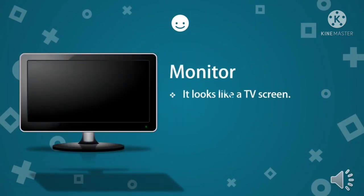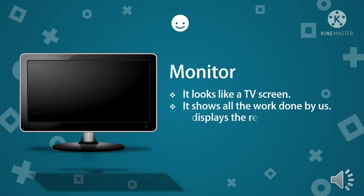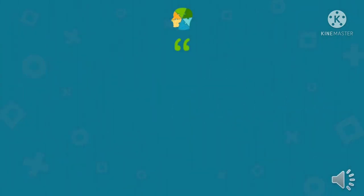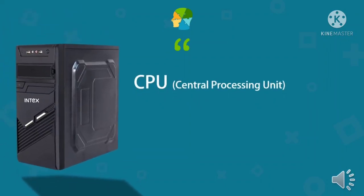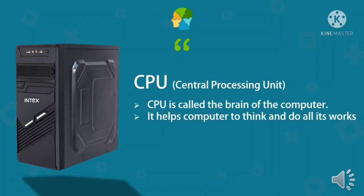Monitor: A monitor looks like a TV screen. It shows the typed text and the work we do on a computer. It also displays the result, and we can see movies and play games using a monitor. CPU: Have you seen a black box attached to your computer? That black box is known as the CPU, that is, Central Processing Unit. The CPU is called the brain of the computer, just as our brain controls all the different parts of the body. All the parts of the computer are connected to the CPU.